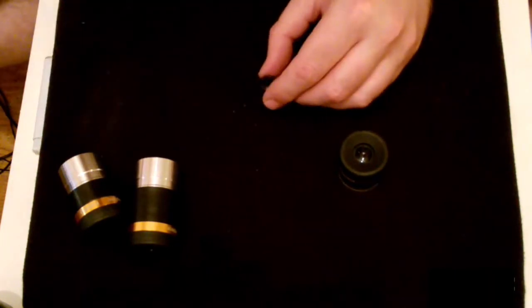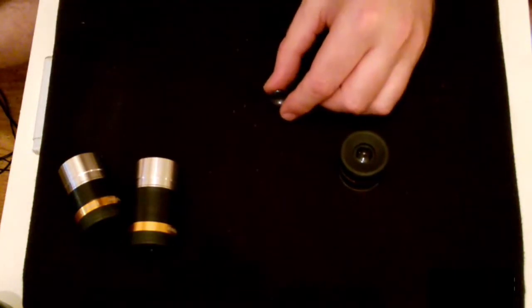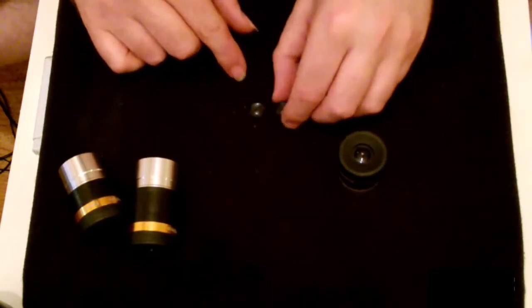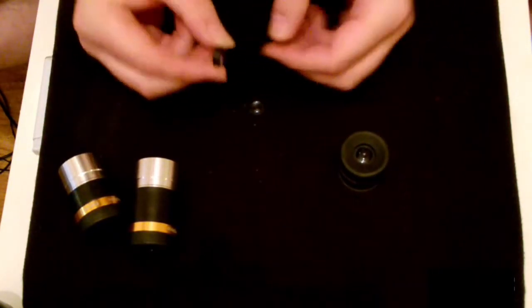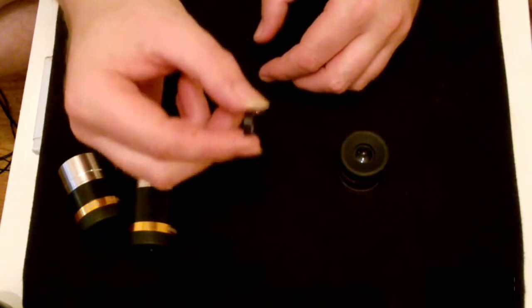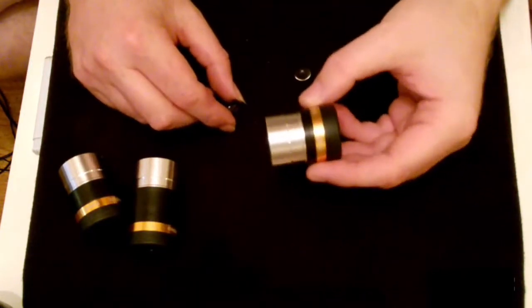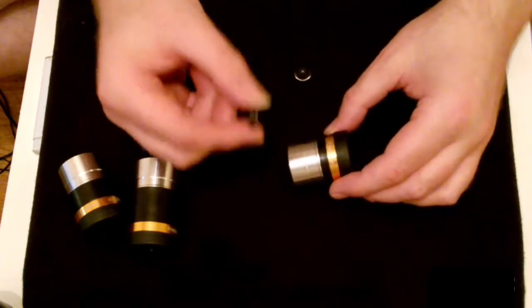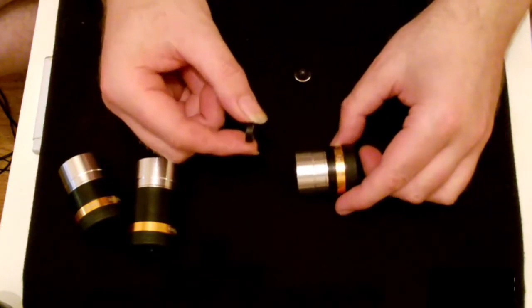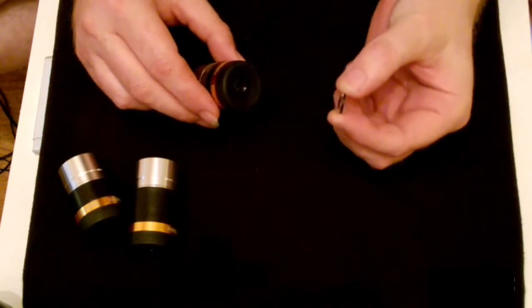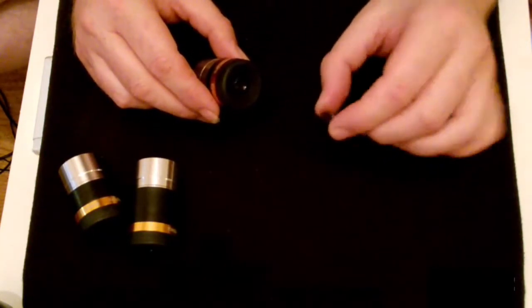I'll just explain how they are made. This is out of a 10mm modified achromatic and you usually get a cemented doublet and a single lens. These are made up exactly the same.